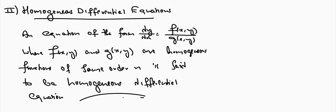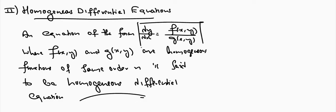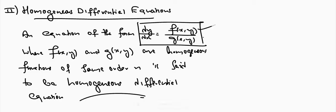An equation of the form dy/dx equals f(x,y) divided by g(x,y), where f(x,y) and g(x,y) are homogeneous functions of the same order, is said to be a homogeneous differential equation. Now, what is a homogeneous function? f(x,y) and g(x,y) are homogeneous — let us define that.